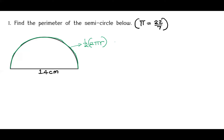So this is (1/2) × 2 × (22/7) × radius. We need the radius, but we are given the diameter. Since the diameter is 14, the radius will be 14 ÷ 2 = 7. So we multiply by 7. The 7 cancels with the 7, and the 2 cancels with the 2, and we remain with 22 centimeters.